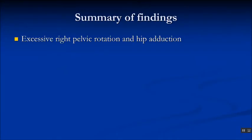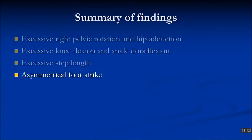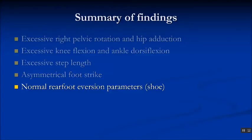So what's the summary of our findings? We have excessive right pelvic rotation and hip adduction. We have excessive knee flexion and ankle dorsiflexion. There is an excessive step length, an asymmetrical foot strike, and normal rear foot eversion parameters on the shoe.